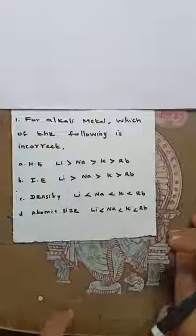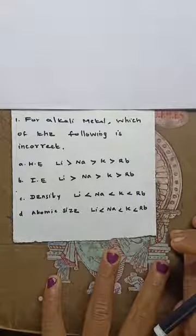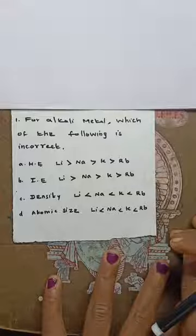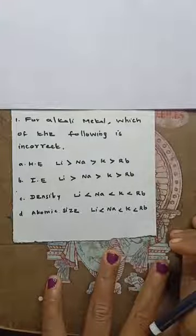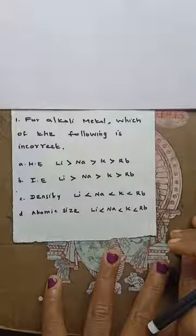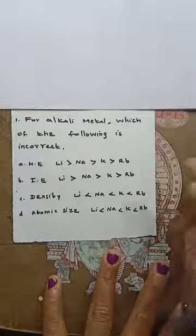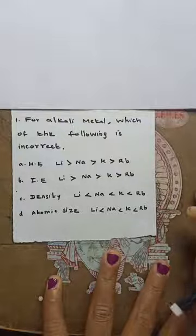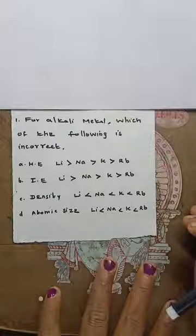Good morning students. For this session we are going to discuss the Choose the Best Answer questions in Unit 5 - Alkali and Alkaline Earth Metals. According to the deleted portions, Unit 5 is completed, so now I am going to discuss the choose the best answer section.